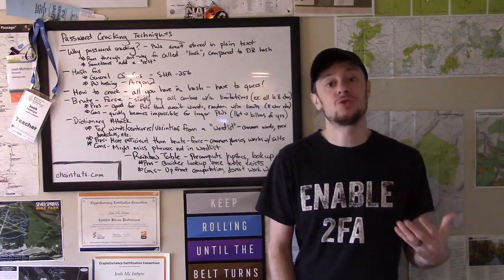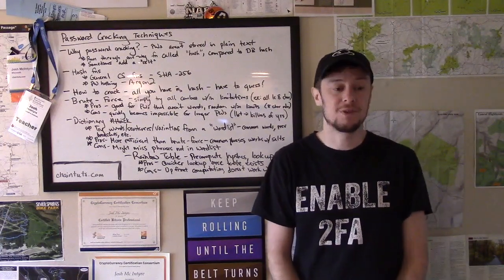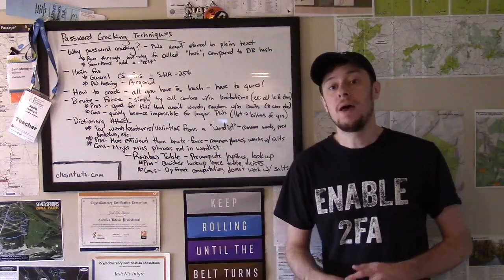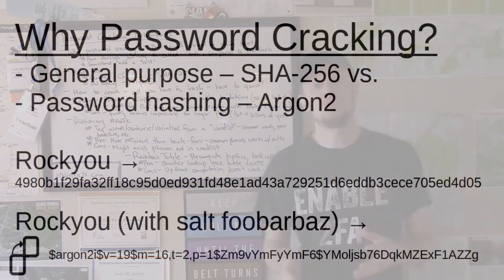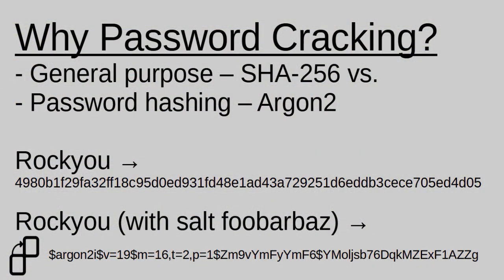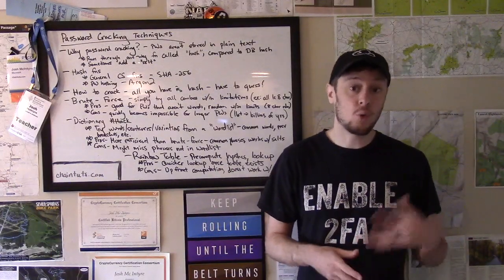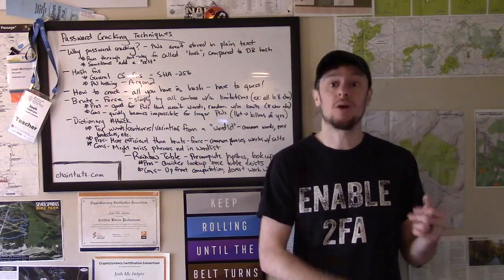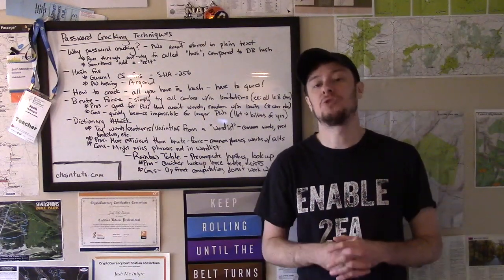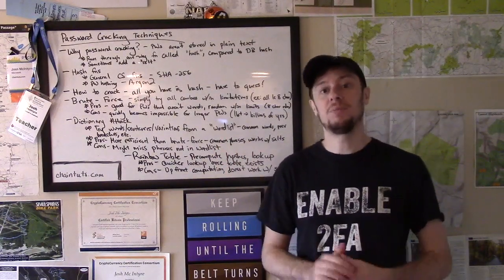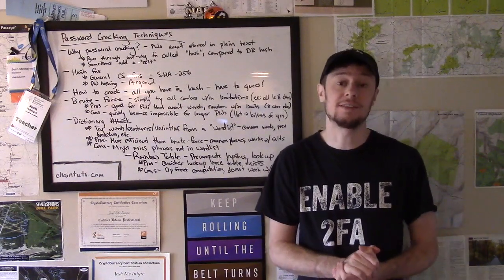Sometimes passwords are just run through the hash function by themselves. But other times — and this is an excellent security practice — the system adds what is called a salt to the password before running it through the function. So you have the user password and some random salt value that you store alongside the password hash. To authenticate, you take the user password plus the stored salt, run it through the hash function, and look for a match in the password database. This will come into play later as we talk about some of these different cracking techniques.